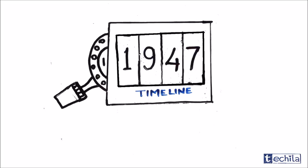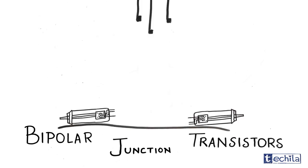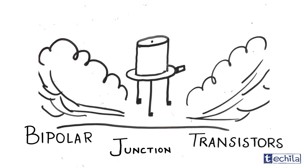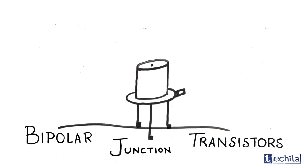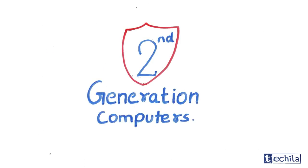Turing machines are the central object of study in the theory of computation. In 1947, William Shockley invented the bipolar transistor which replaced the vacuum tubes in computer designs, giving rise to the second generation of computers.